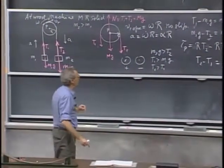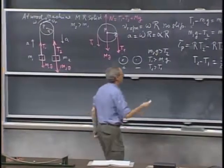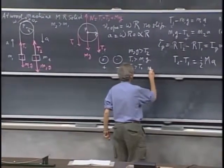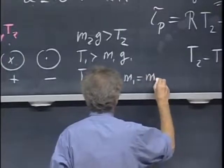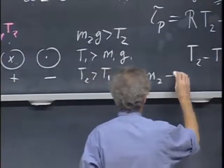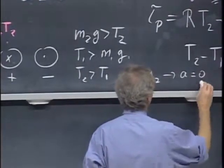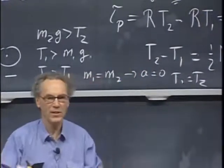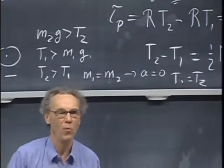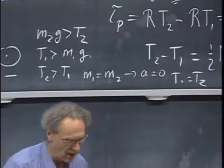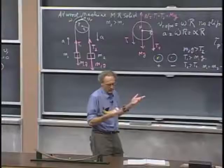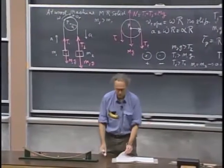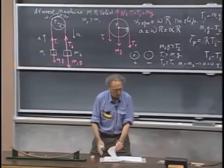It would also be useful, which is a trivial check, to stick in your results m1 equals m2. That should give you that the acceleration should be zero, and it should give you that T1 equals T2. Those are obvious things, and that can be done very simply. That takes you no more than ten seconds. And if any one of these is not met, then somewhere you've slipped up, and it gives you an opportunity to go over the problem again.